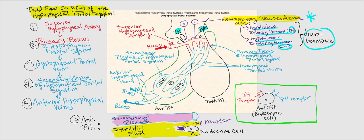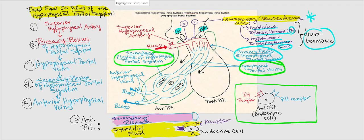The site of exchange happens at the capillary. Therefore, RH and IH enter blood through the primary plexus of the hypophysioportal system. From there, blood flows into the hypophysioportal veins on their way to the anterior pituitary. Upon arrival, RH and IH leave the secondary plexus of the hypophysioportal system — another capillary bed — and enter the interstitial fluid. Why the interstitial fluid? Because their target cells, the endocrine cells of the anterior pituitary, are not inside the blood vessel — they're found in the interstitial fluid.